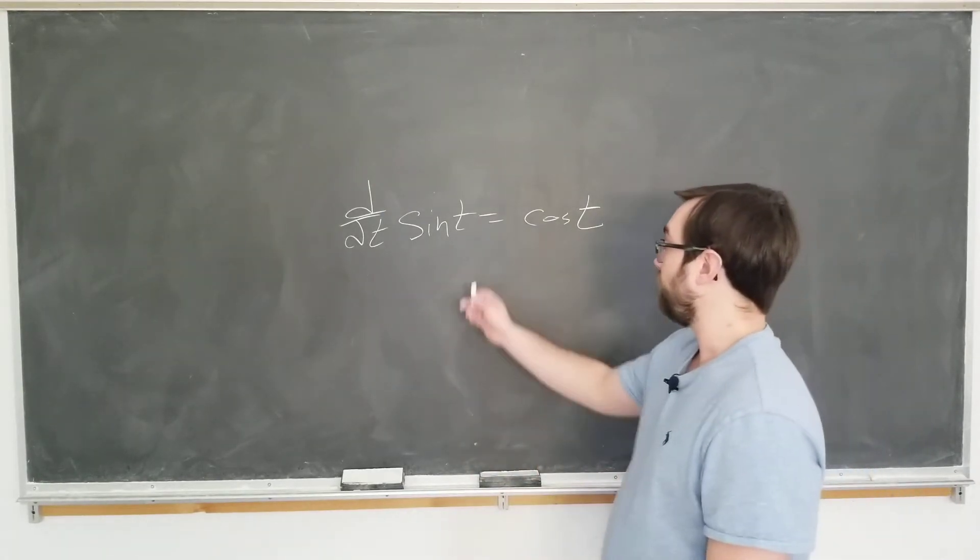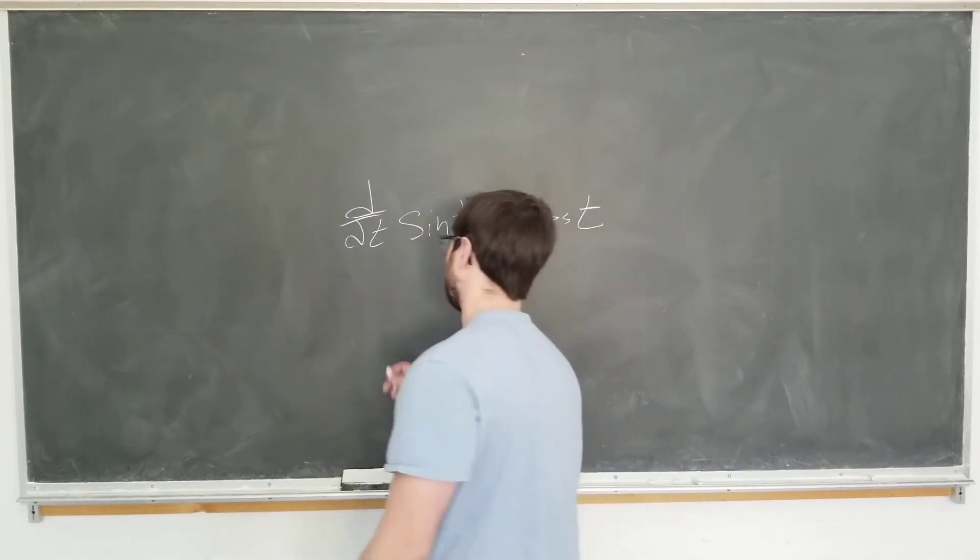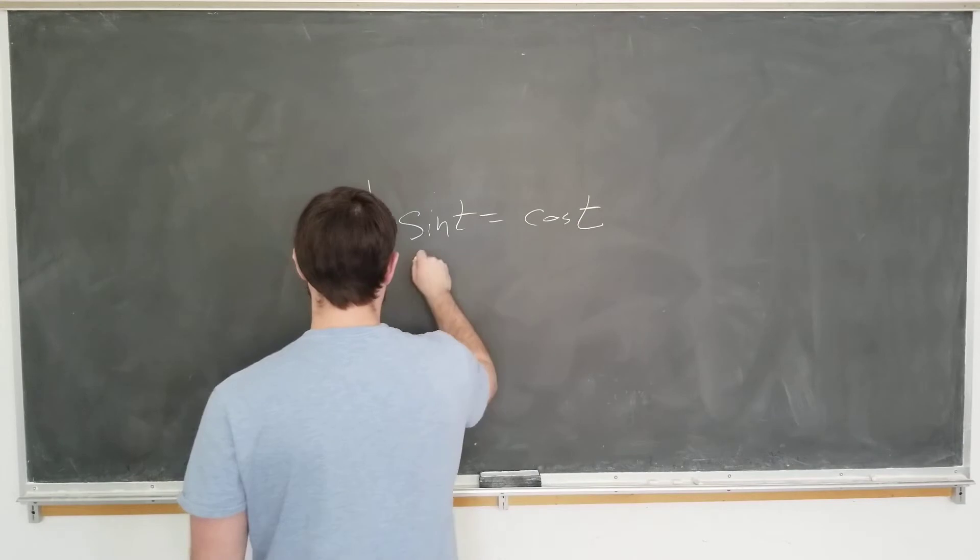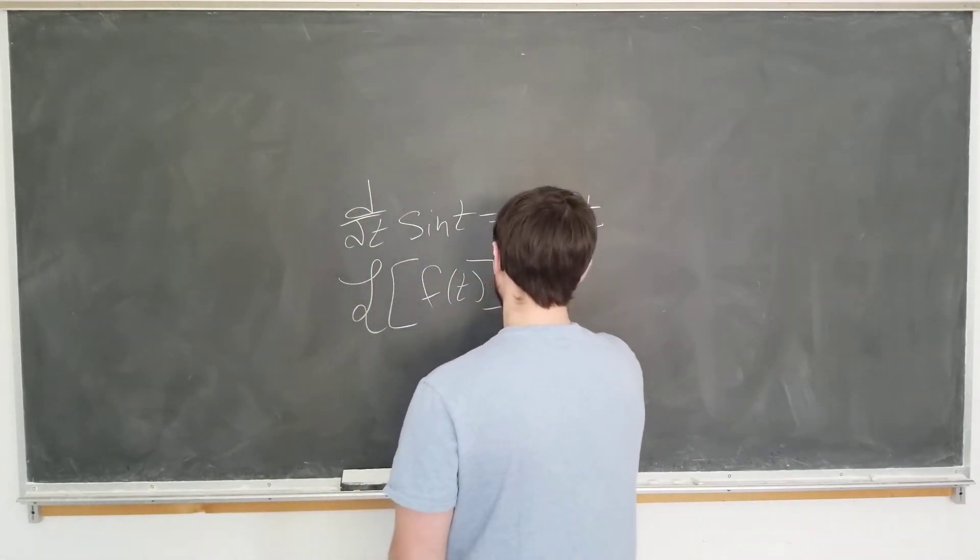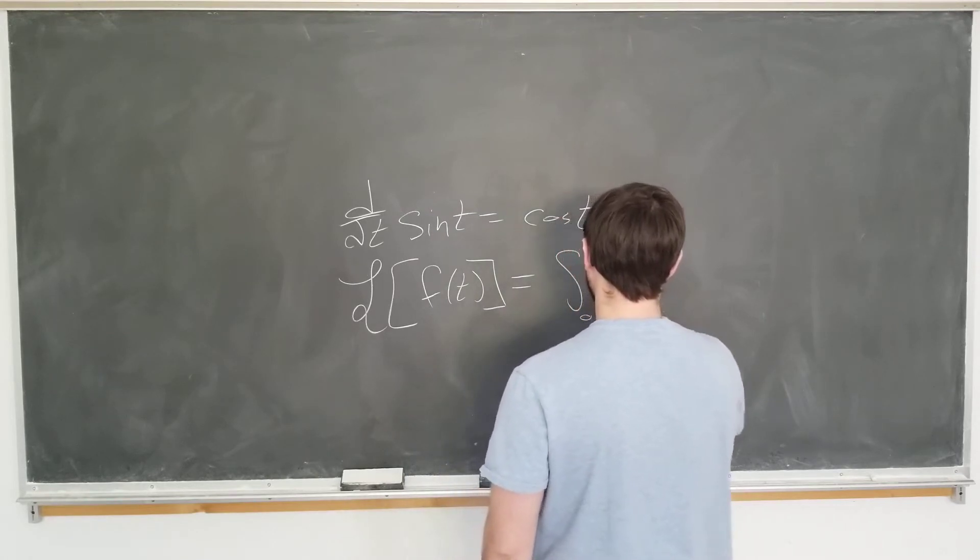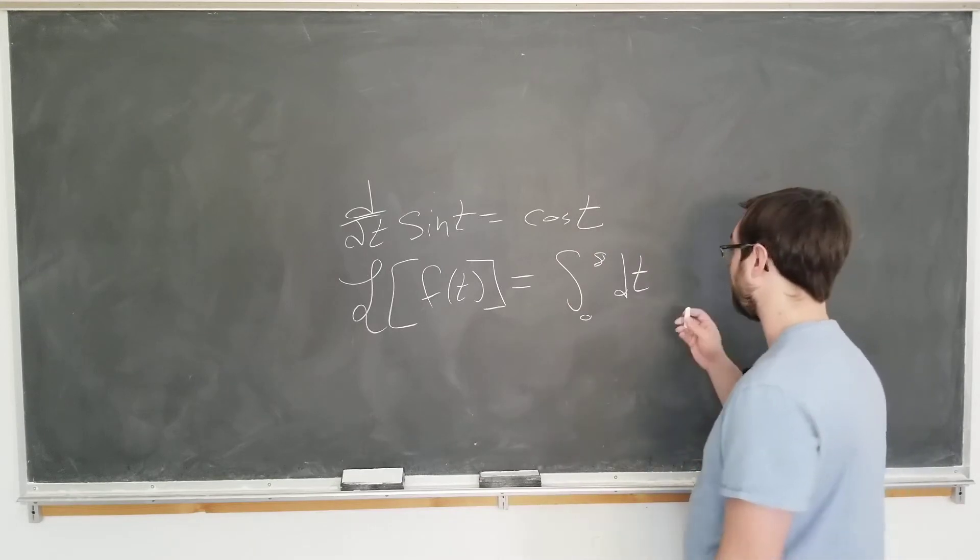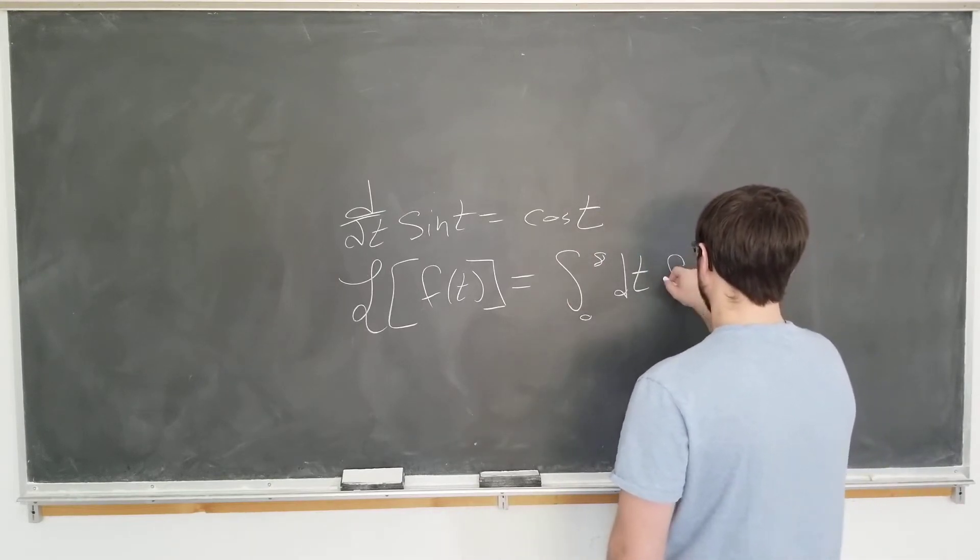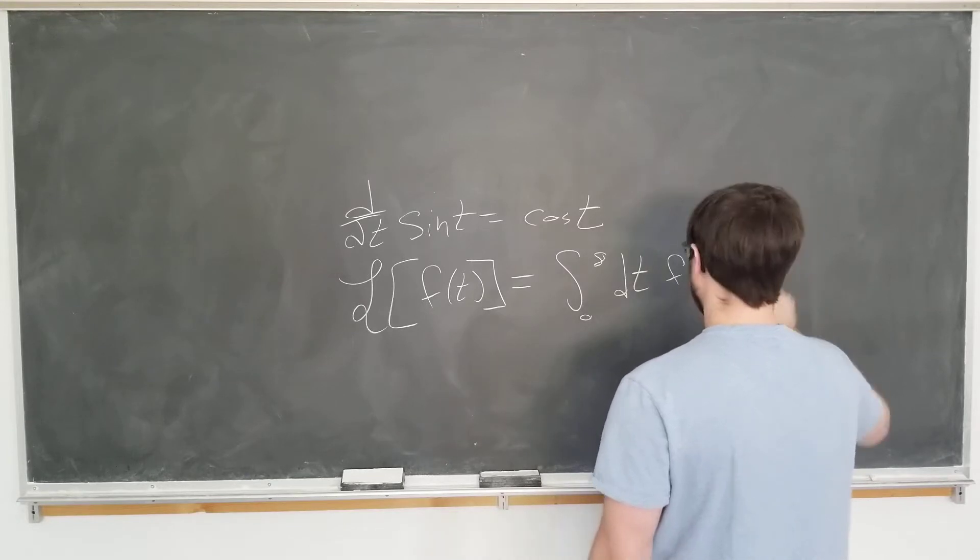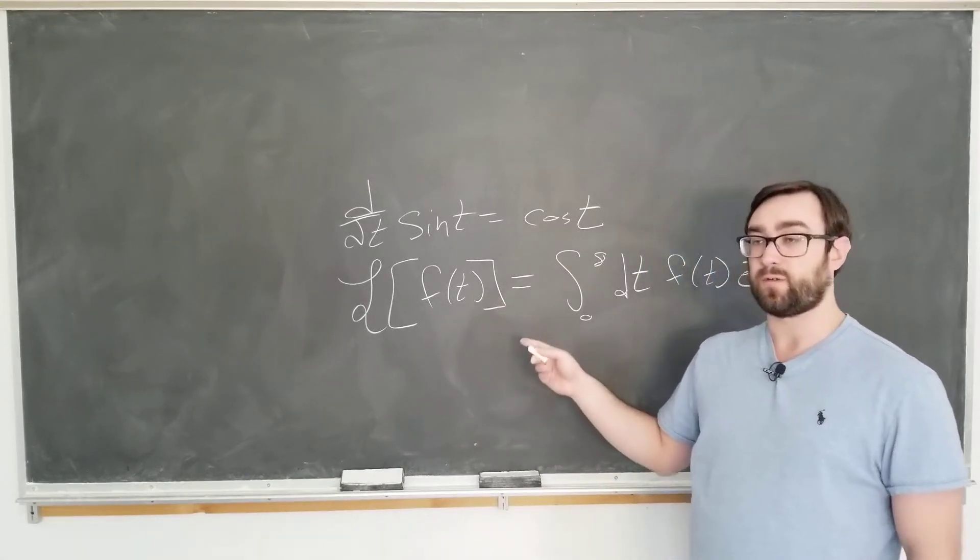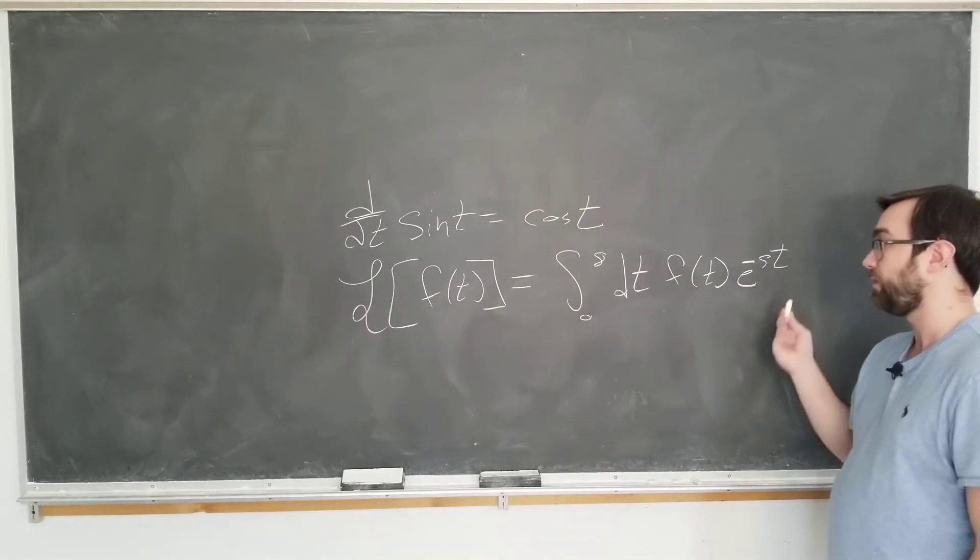And we're using t instead of x because we're going to be using the Laplace transform, defined as follows. The Laplace transform of a function of time is defined to be the integral over positive time of the function times e to the minus st. So even though I'm not writing it explicitly, the Laplace transform itself is now a function of s since we've integrated out all the t's.